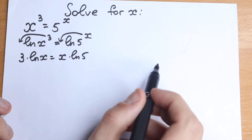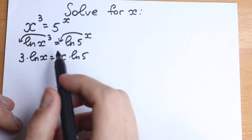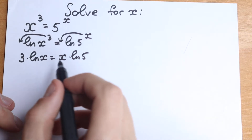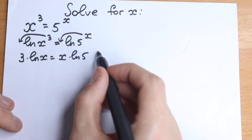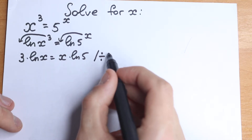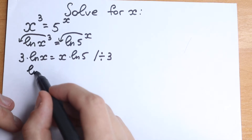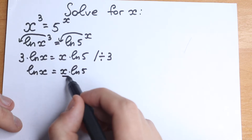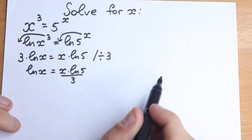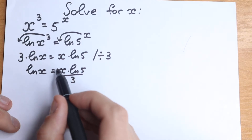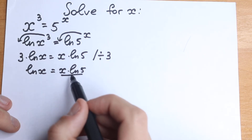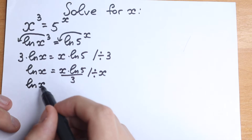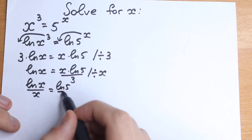This is our first step. Now if I look closely, we have a constant, we have a variable, we have a variable, we have a constant. Let's try to group our variables on the left hand side and our constants on the right hand side. For this, let's divide both sides by 3 — we can easily cancel this. We have natural log x equal to x times natural log 5 over 3. And the second step: we have this x here, but this is our constant part on the right hand side. Let's divide both sides by x. We get natural log x over x equal to natural log 5 over 3 — a constant on the right, a variable on the left.